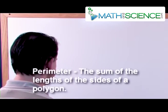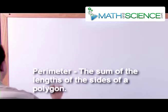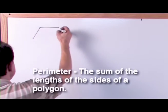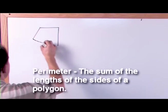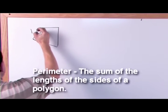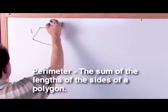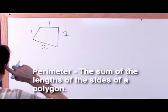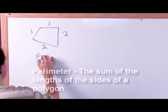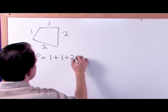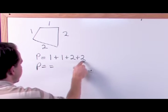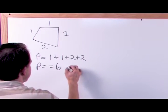The perimeter of a polygon is the total length of all the sides of the polygon. So if you have some shape like this, and this is one centimeter, one centimeter, two centimeters, and two centimeters, then the perimeter is just going to be one plus one plus two plus two, so the perimeter is going to equal six centimeters.